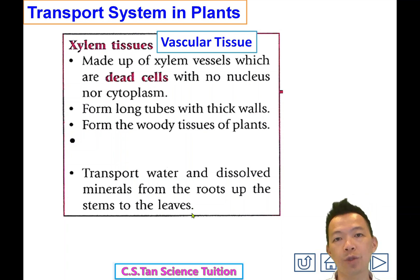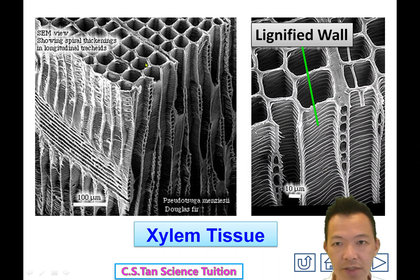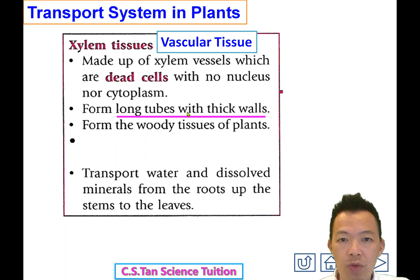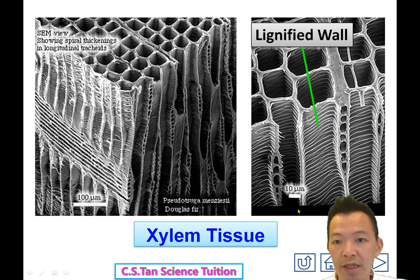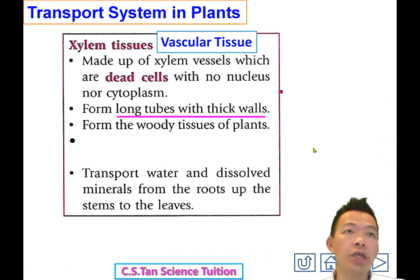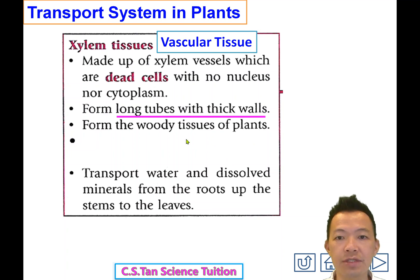Xylem tissue transports water and minerals from the root up to the stem and the leaf — 從根送上莖然後跑去葉子. How is the xylem tissue structured? They form long tubes with thick walls 長長的一條，厚厚的牆壁. The wall is made of cellulose fibres 纖維素造成的, so they form the woody tissue of the plants 植物身體裡面的木質.